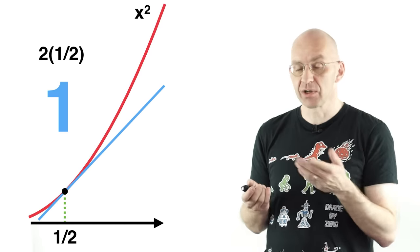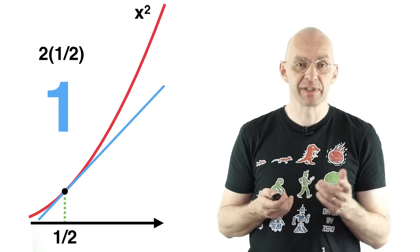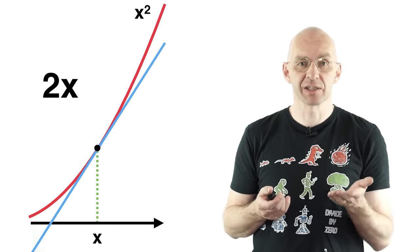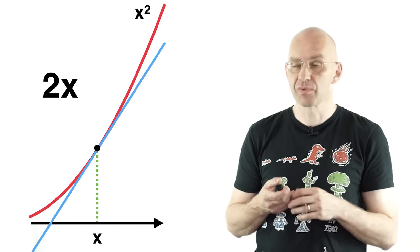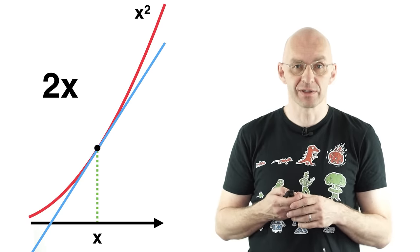Now a half was actually not very special here. We could have used any initial value here. And if we did that we would find that the derivative of x squared is 2x. So once we've got that we've got this whole thing under control as far as calculus is concerned.